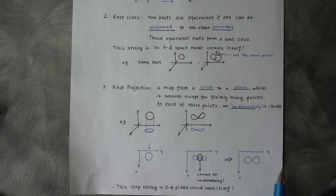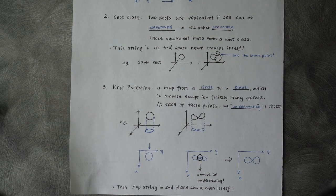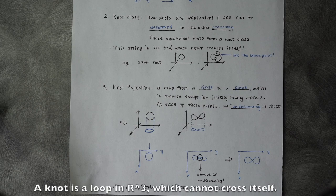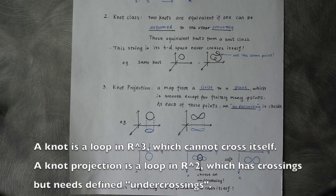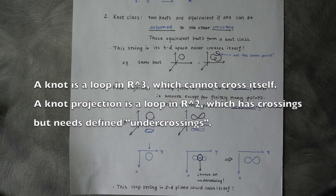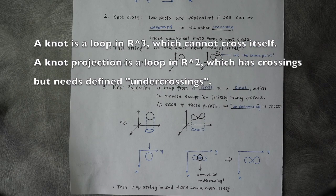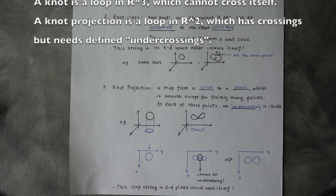We need to define an inner crossing. So although the knot is a loop string which cannot cross itself in R3 space, a knot projection is a loop string which could cross itself, but needs definitions for inner crossings.